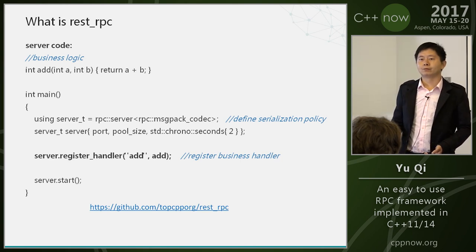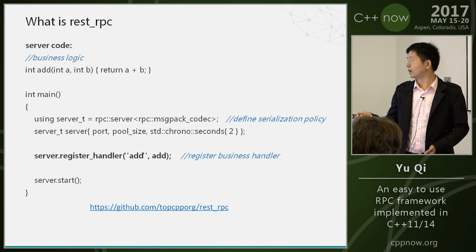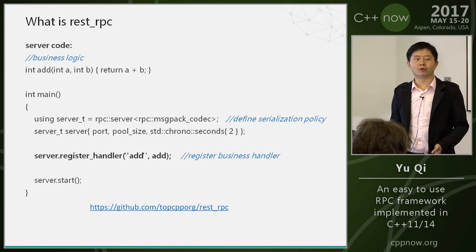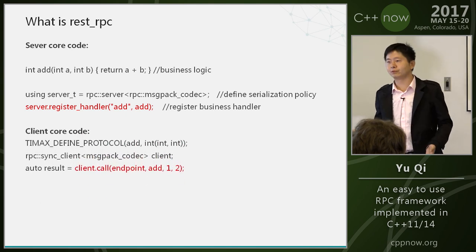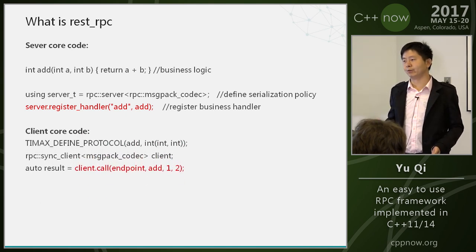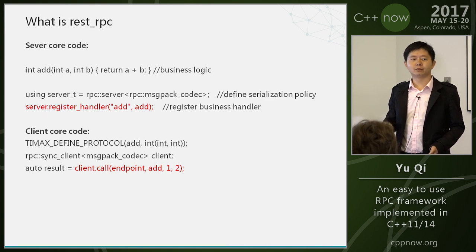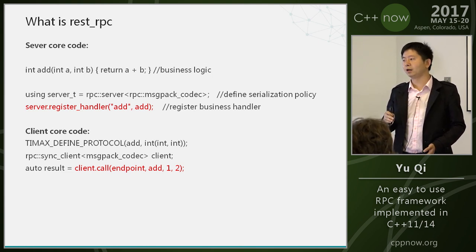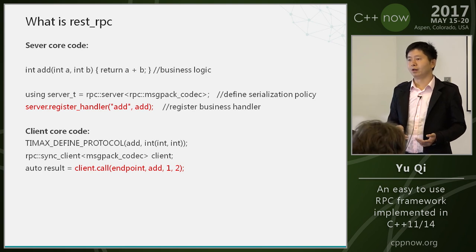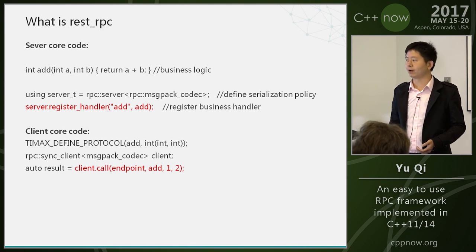The code is on GitHub, and the client code is also very simple. After you register the business logic, you can call the service — just call a local function. I think you can finish a network application in five minutes.